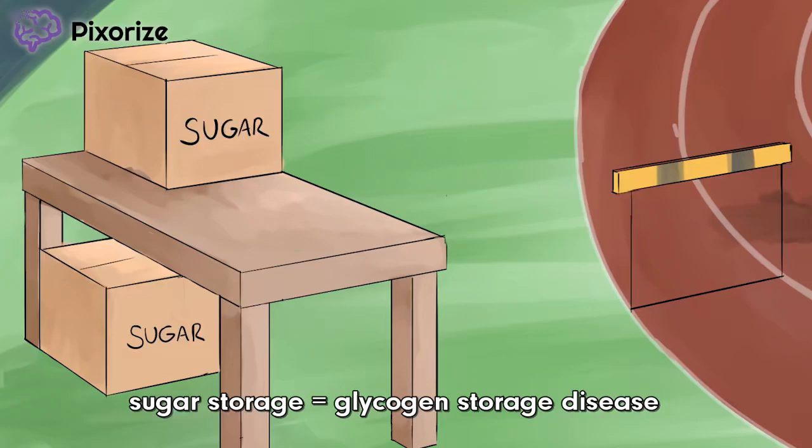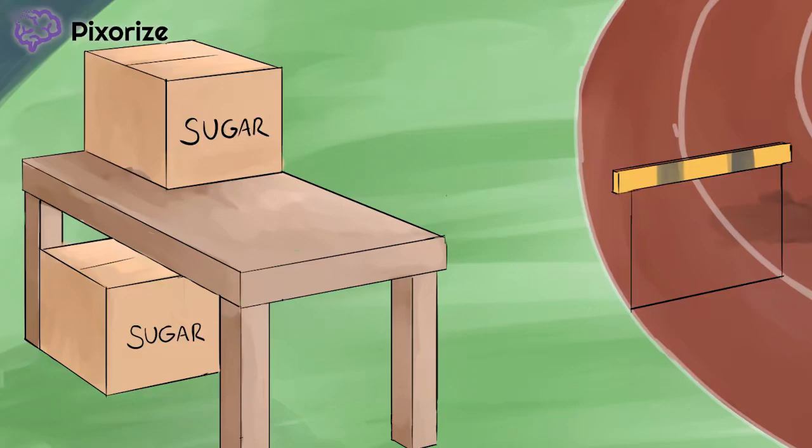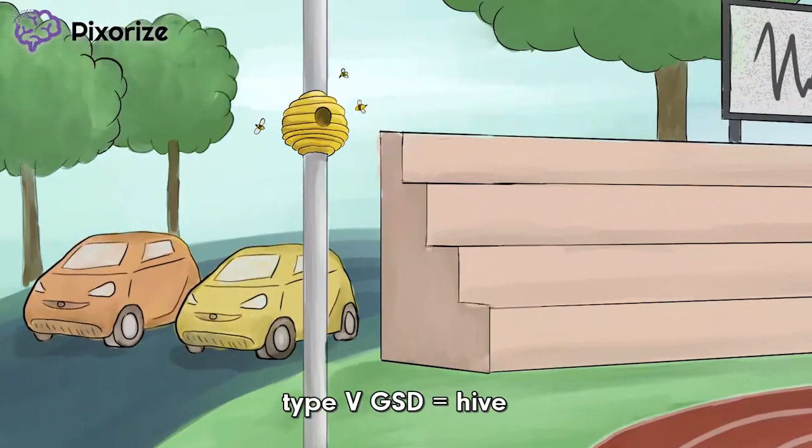McArdle disease is sometimes called type 5 glycogen storage disorder, which is why we've drawn this beehive attached to this pole. Get it? Hive for 5?